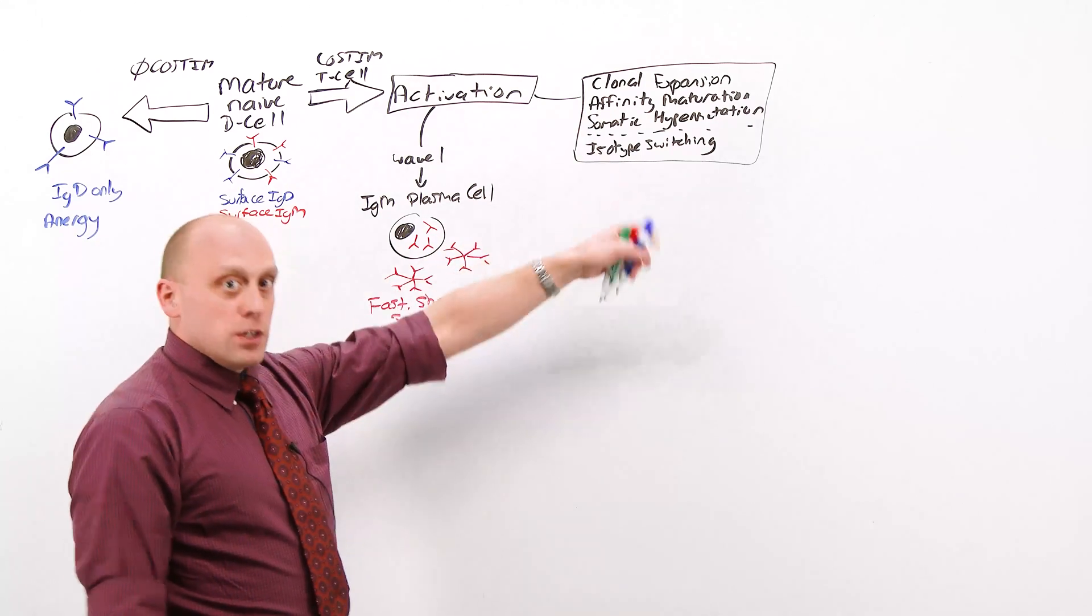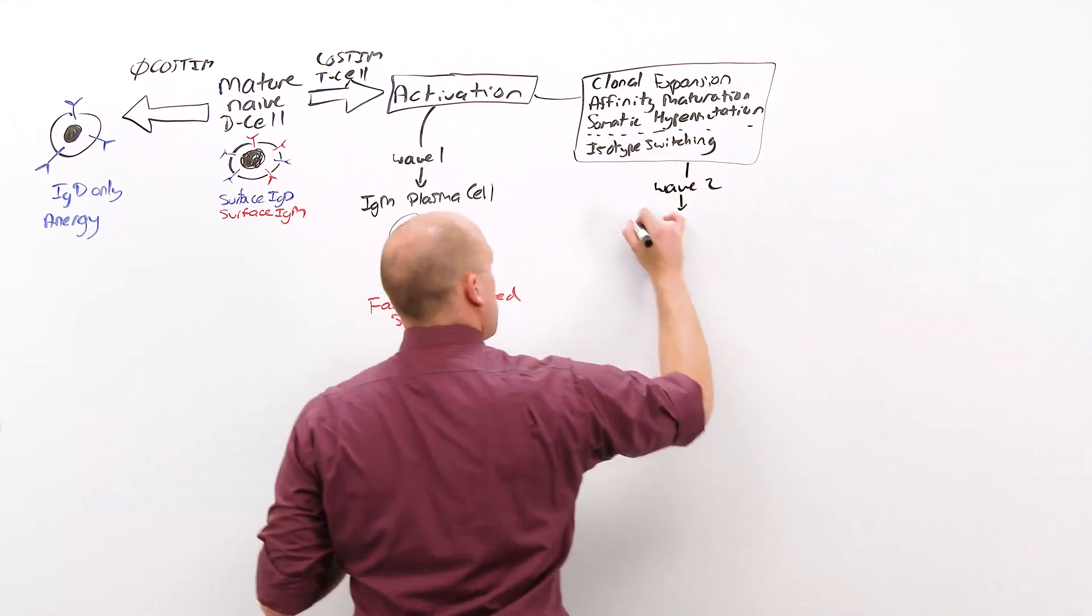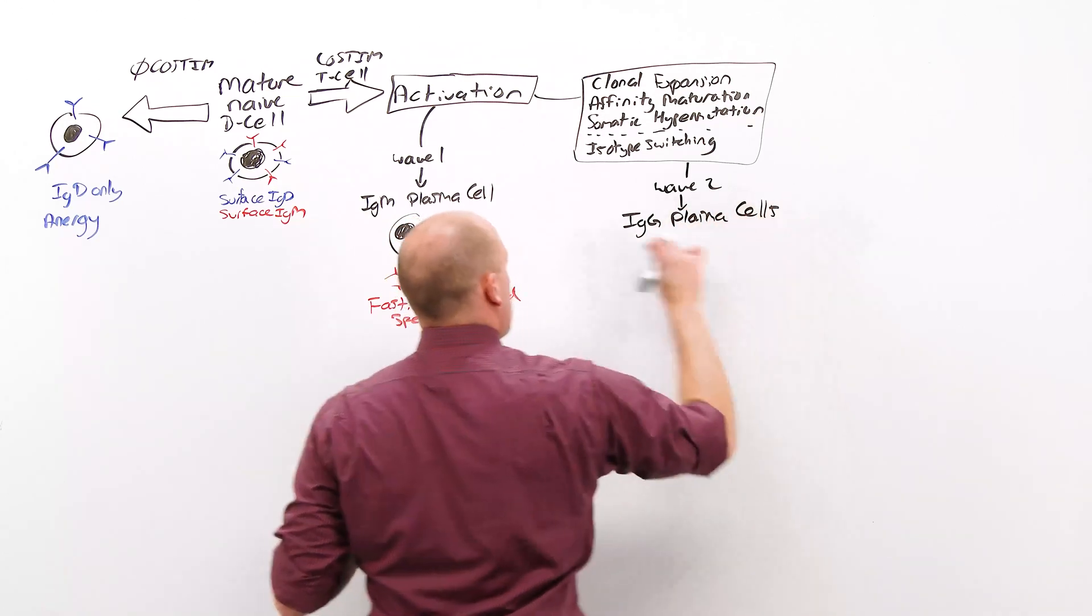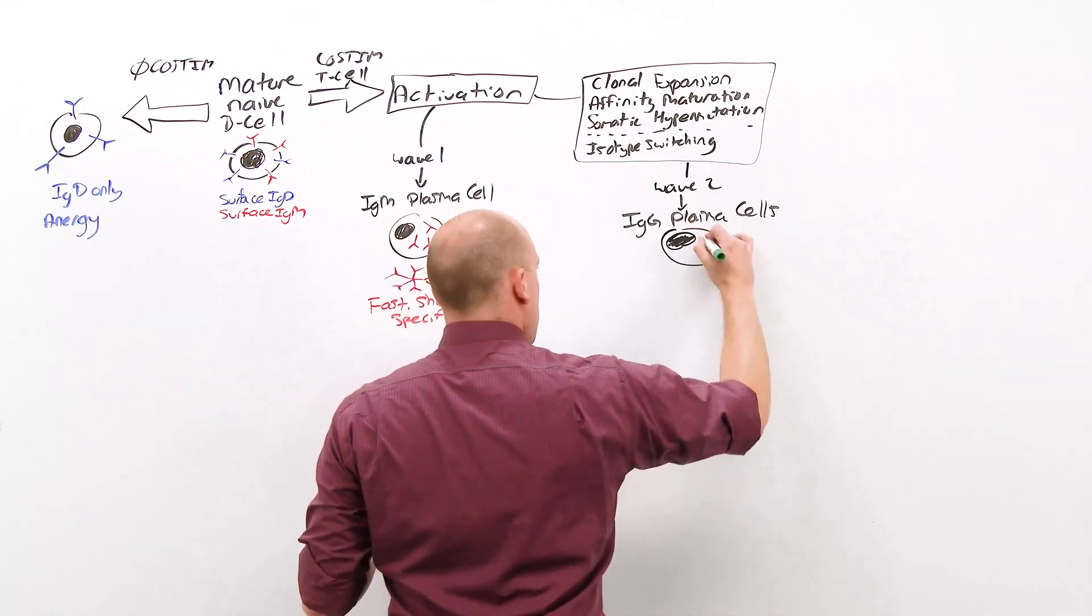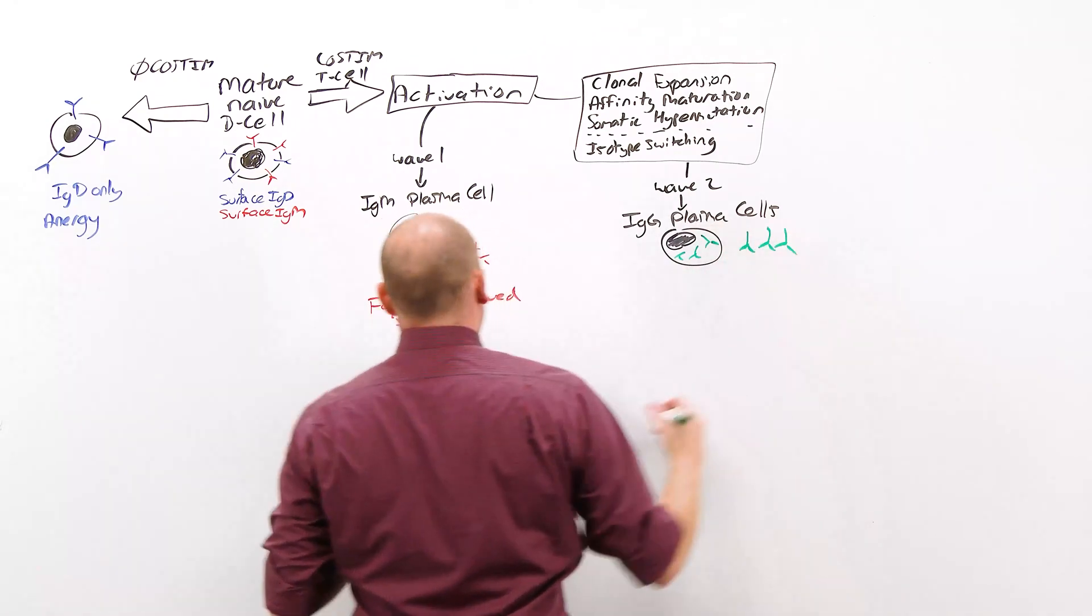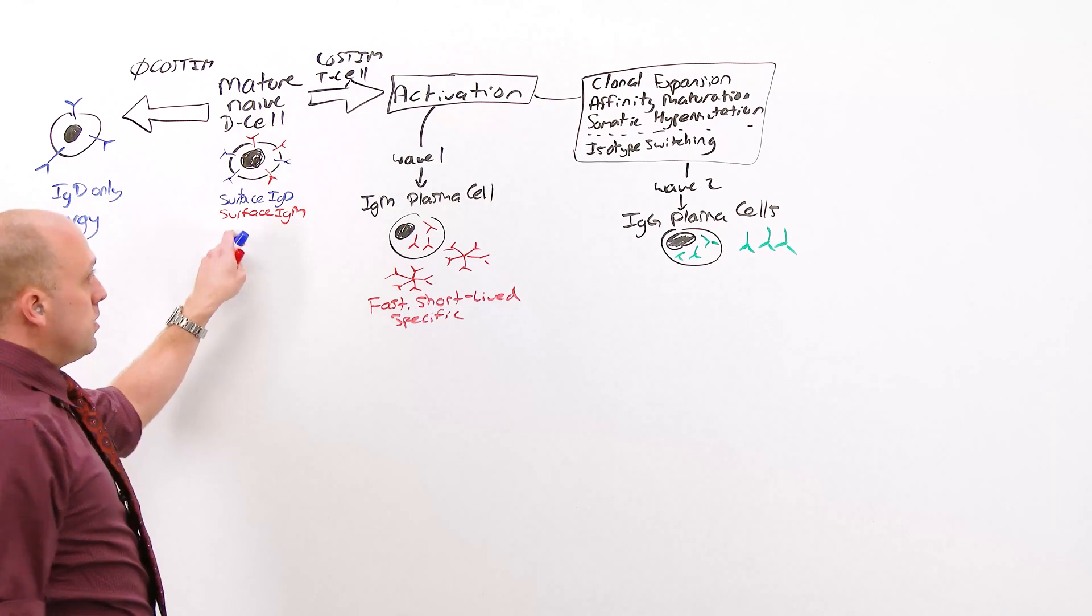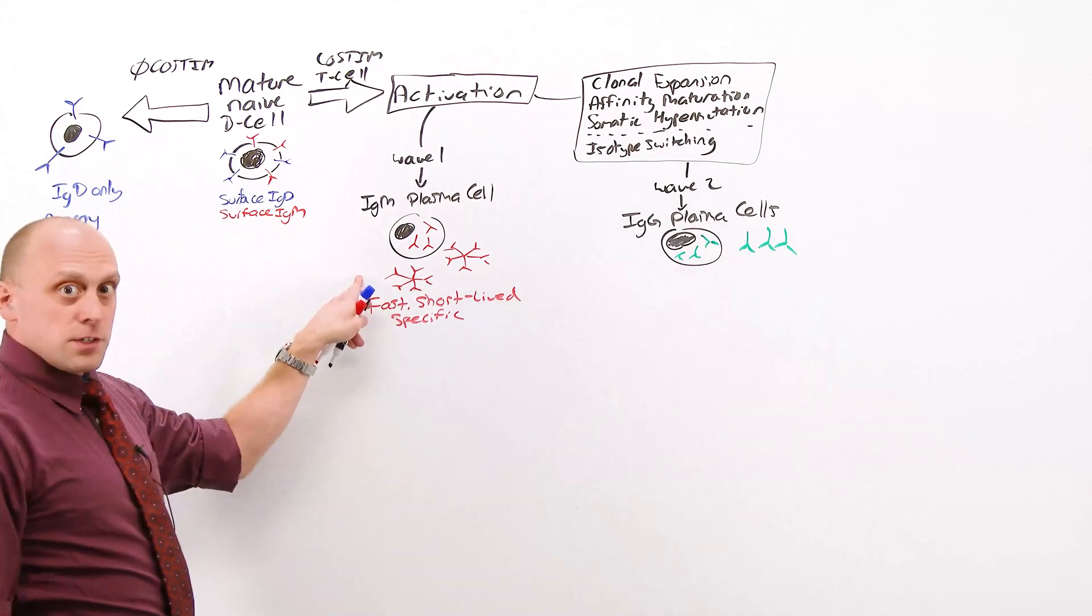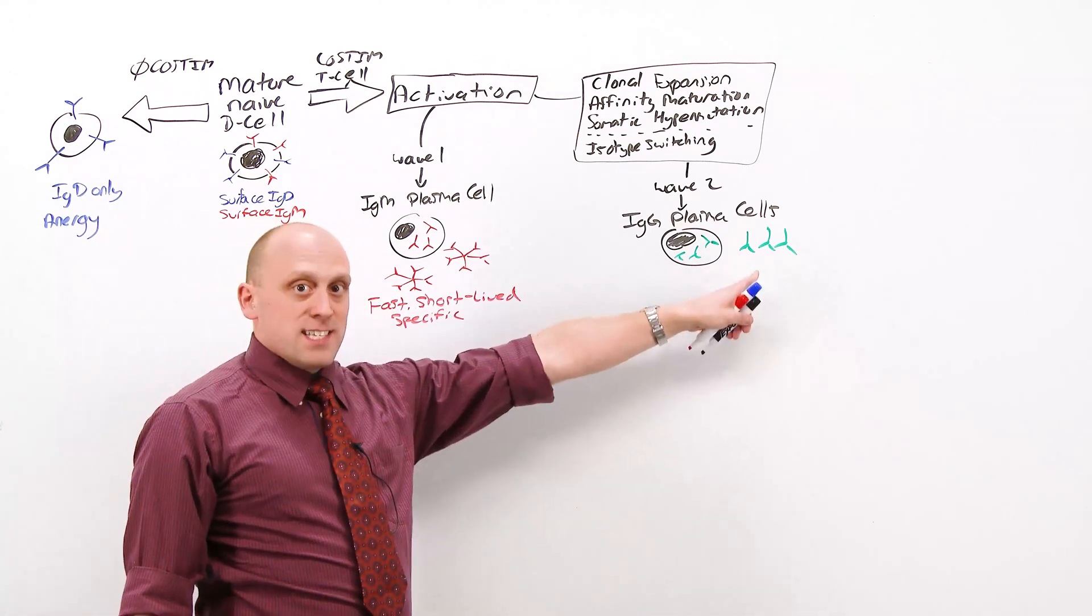After all this happens, comes wave two. Wave two also has plasma cells. They're IgG plasma cells. This is a bacterial infection, so IgG is going to be what it is. These cells also make immunoglobulin and secrete it as antibody. This, from the process of infection to the mature, naive B-cell identifying the antigen, to the activation of these IgG plasma cells, takes time. IgM happens first, as the bridge between an immune system and the really good snipers trained specifically against that antigen.